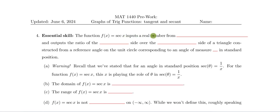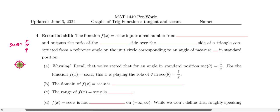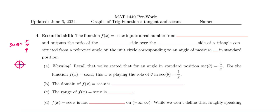The graph of the secant function inputs real numbers. To see that, we look at our definition: secant of θ equals r over x. Similar to the tangent function, on the unit circle there are some angles — such as 90 degrees or 270 degrees, or π/2 and 3π/2 — where the x-coordinate is 0, so the secant will not be defined.